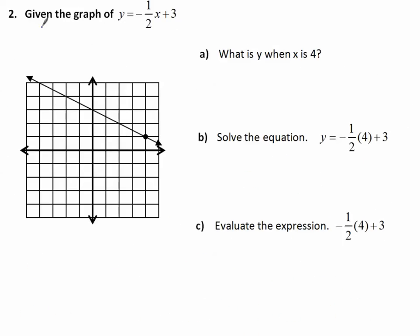Number 2: Given the graph of y equals negative 1 half x plus 3. What is y when x is 4? Looking on the x-axis, I count to 4, look up to the graph, find the point, and that corresponds with the value on the y-axis of 1. So y is 1.